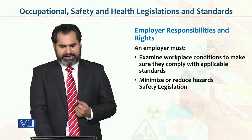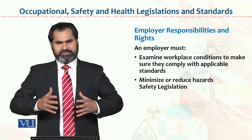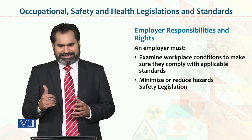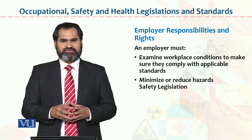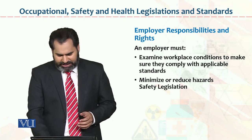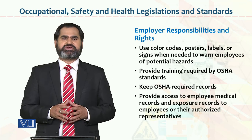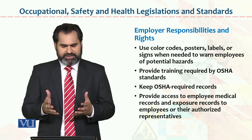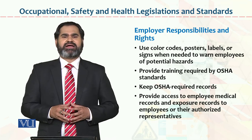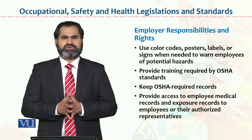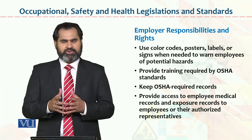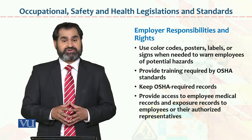Employer responsibilities and rights include: examining workplace conditions continuously, monitoring and minimizing or reducing hazards in safety legislation, and implementing measures so the organization can benefit. Employers must use color codes, posters, labels, and signs when needed to warn employees of potential hazards. Employers must also provide training as required by OSHA standards.